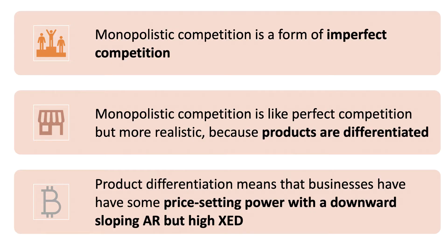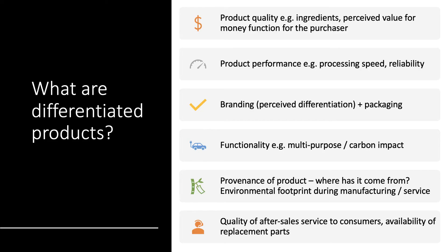Because there are many substitutes in the market, the cross-price elasticity of demand will be pretty high. Product differentiation is a key aspect of monopolistic competition. It could be the quality of the product, the ingredients, the perceived value for money — not just price but also quality and product performance such as processing speed for digital items, reliability, branding, packaging, functionality, and increasingly consumers are attuned to the provenance of a product — the carbon footprint of manufacturing — and the environmental and social aspects of product supply.